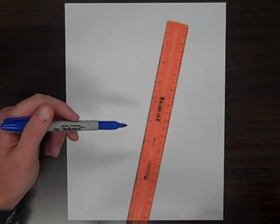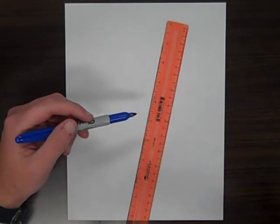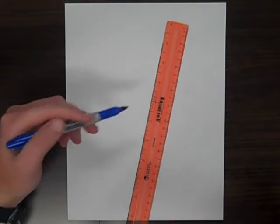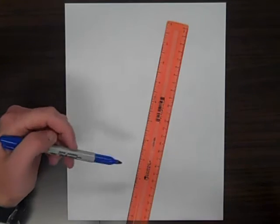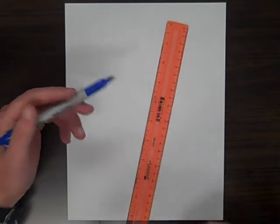The first thing I want to do is make sure that I've got a ruler to use. Remember, anytime you're drawing straight edges, it's good to have a ruler. If you don't have a ruler at home, you can use the edge of a notebook to help you out.